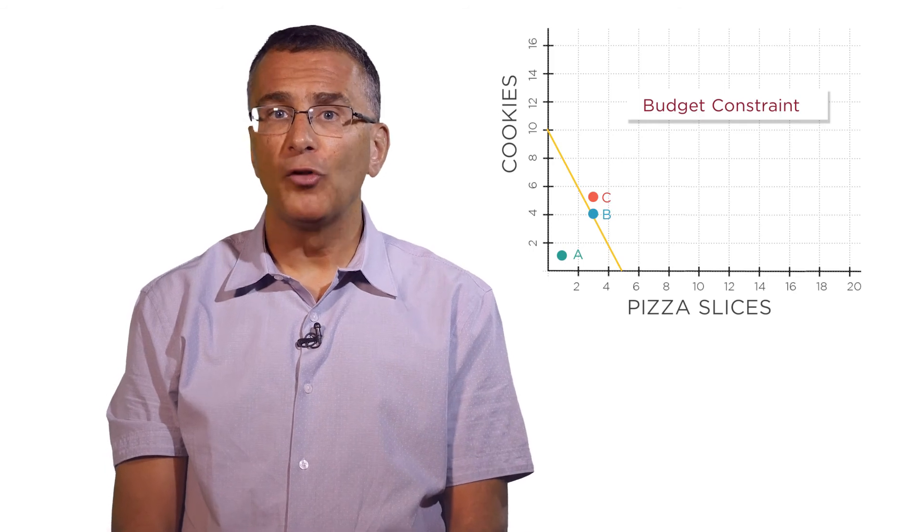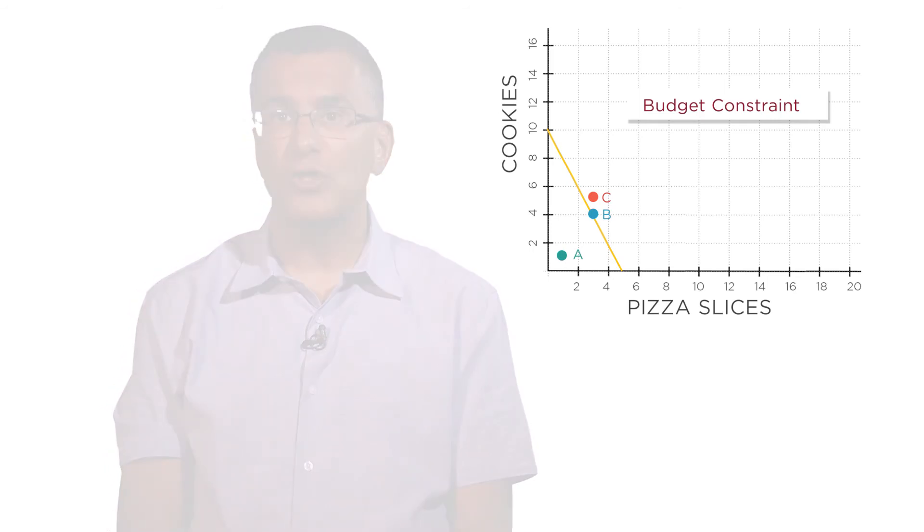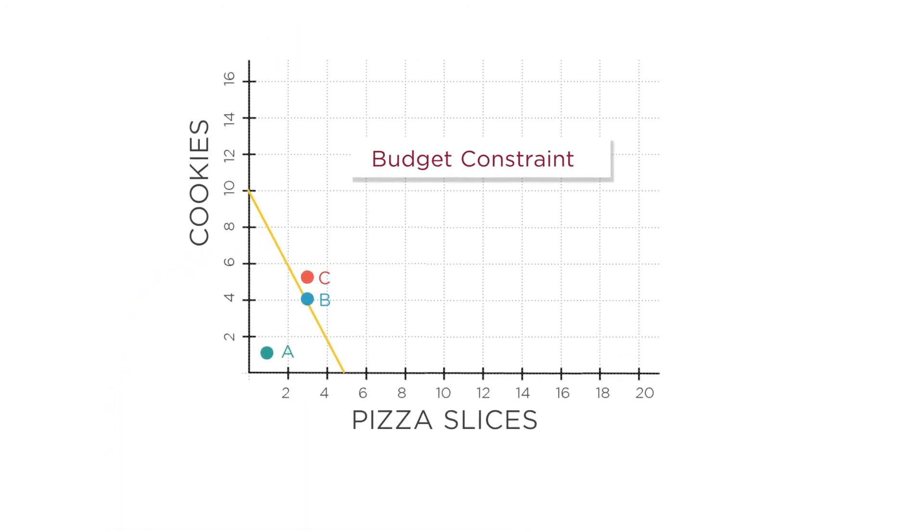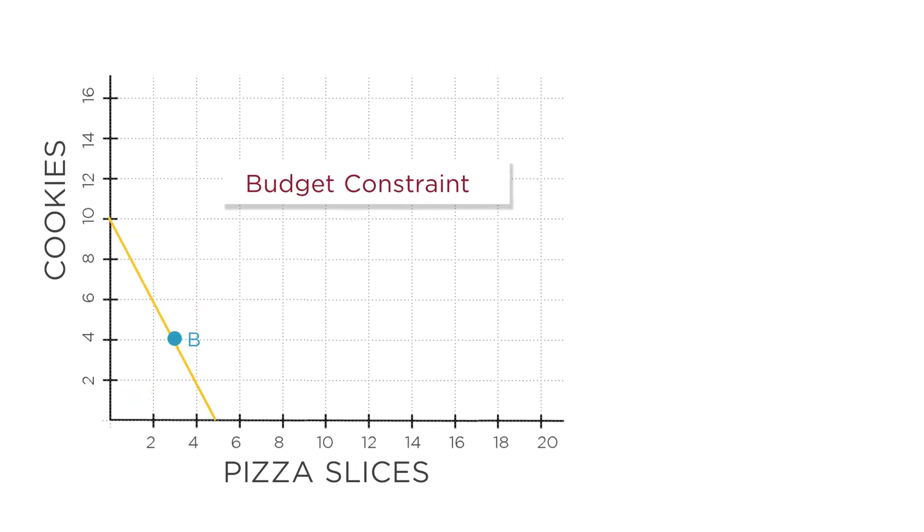The budget constraint graph is also nice because it illustrates our old friend, trade-offs. So for example, start at point B with three slices of pizza and four cookies. Now you decide you're still hungry for something savory. You want more pizza. How do you get that?